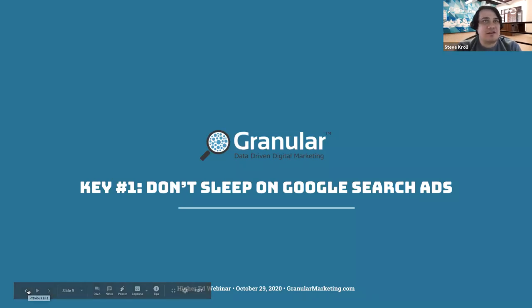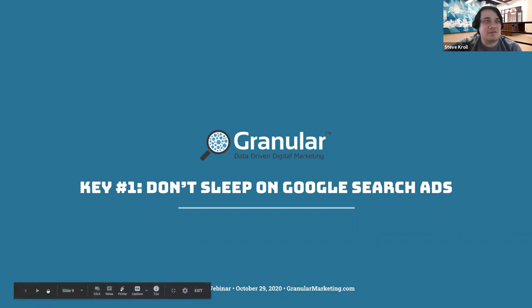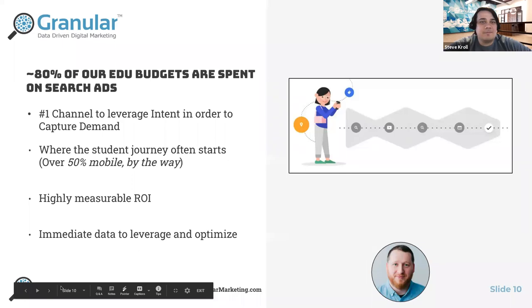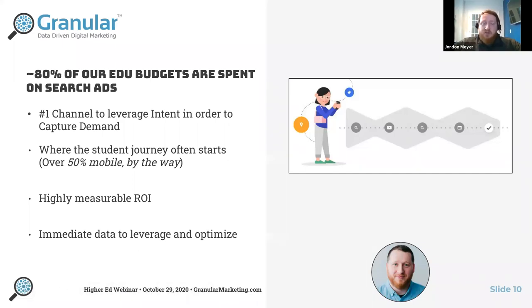Key number one is don't sleep on Google Search. Even though Granular manages over 20 paid channels including connected TV and programmatic, search remains the number one channel to leverage intent and capture demand. People literally go to search engines to find colleges, degrees, program information, how to apply, costs, and outcomes — and that's why they spend nearly 80% of budgets on search ads.